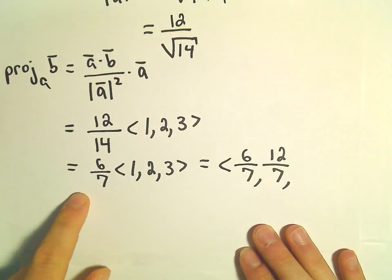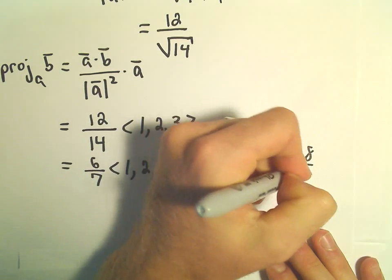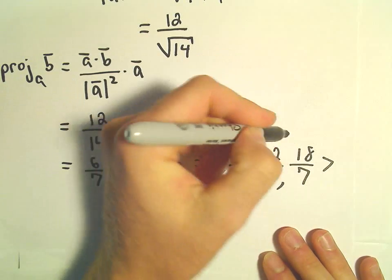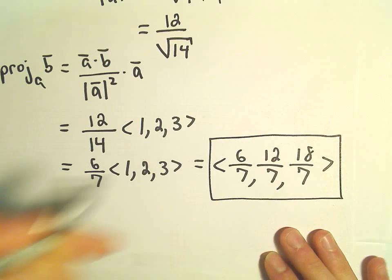And then we'll multiply 6 over 7 times 3, that'll give us 18 over 7. And now, we have our vector projection.